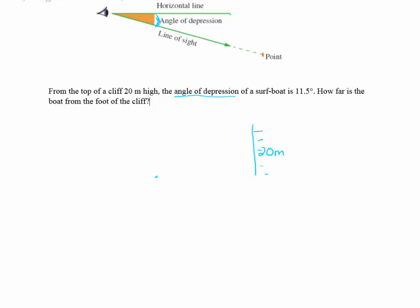And I'm now going to be looking at an angle of depression. So an angle of depression is when I look out to the horizontal and then I look down to the point. And this angle in here is my angle of depression. And in this case it's 11.5 degrees.